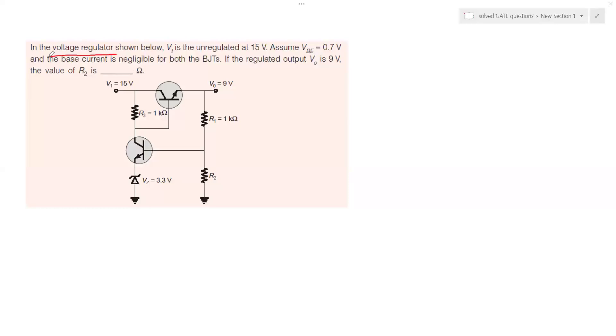It says in the voltage regulator shown below, Vi is the unregulated voltage of 15 volts. Right here is 15 volt.